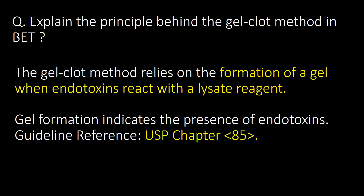Explain the principle behind the gel clot method in BAT. The gel clot method relies on the formation of a gel when endotoxins react with the lysate reagent, as seen in the LAL test. Gel formation indicates the presence of endotoxins. The reference guideline for this method is USP chapter 85.